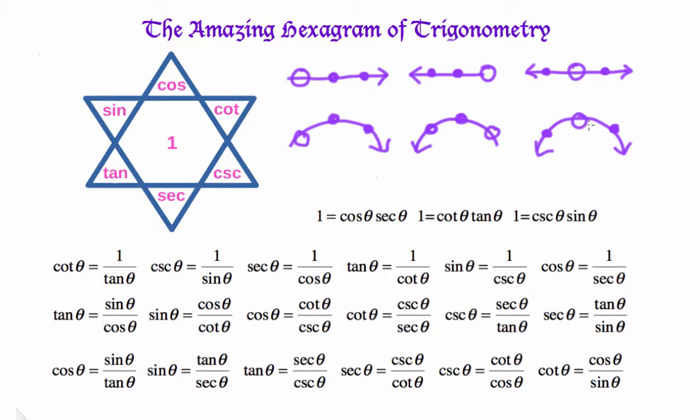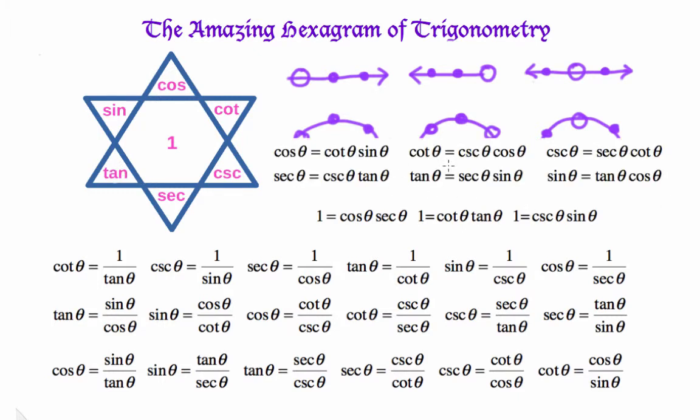And we've only one left. And that's this one where we get the middle. Cosine, for instance, is sine times cot. Cotangent is cosine times cosecant. Cosec is cot times sec. Sec is cosec times tan. Tan is sec times sine. Sine is cos times tan. Let's have a look at these. There they all are. Another six formulas.